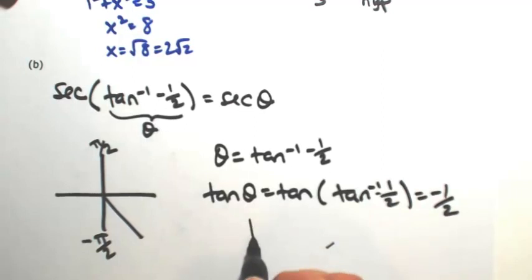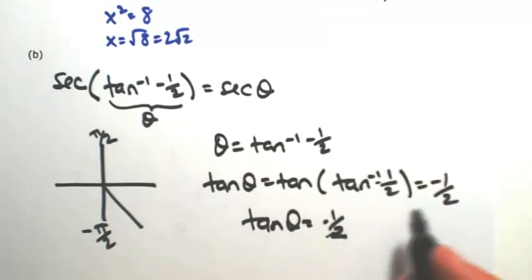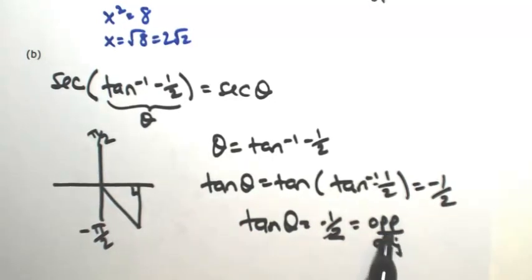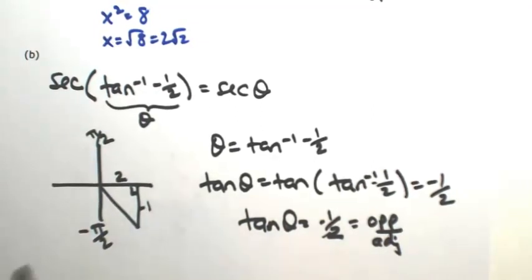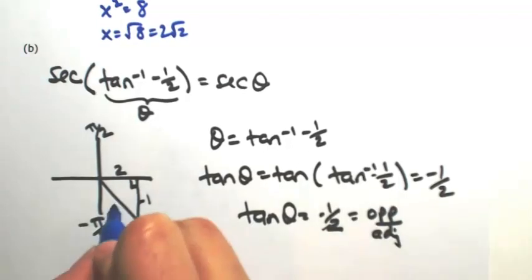So this means that the tangent of theta is negative 1 half or opposite over adjacent. So in the fourth quadrant, I'm going to make this a right triangle with the opposite side being my one, my adjacent side being two, and the one that's going to be negative would be the one. So I have a missing side, which is the hypotenuse. I'll call it x.